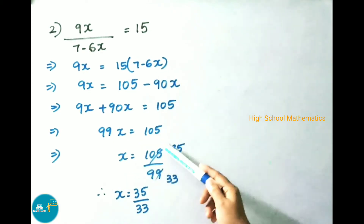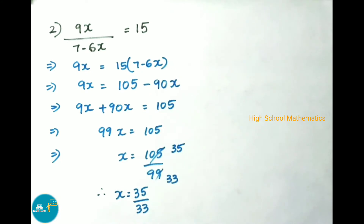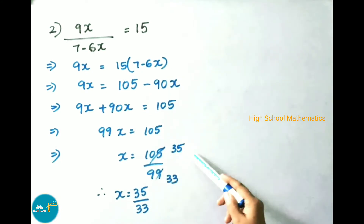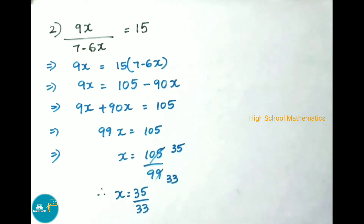Now x = 105/99. Using the 3 times table: 33 × 3 = 99 and 35 × 3 = 105. Therefore x = 35/33.